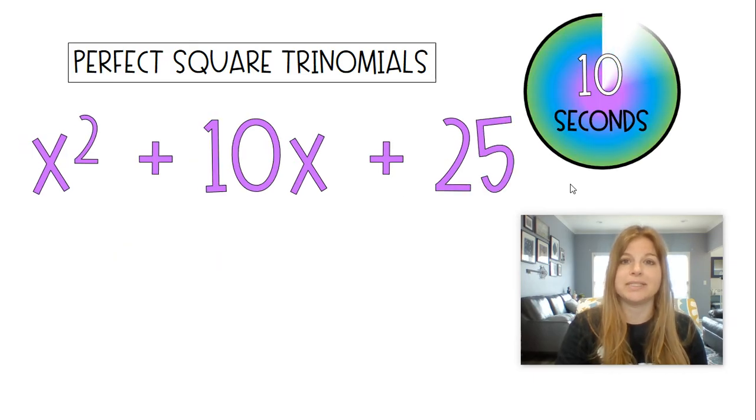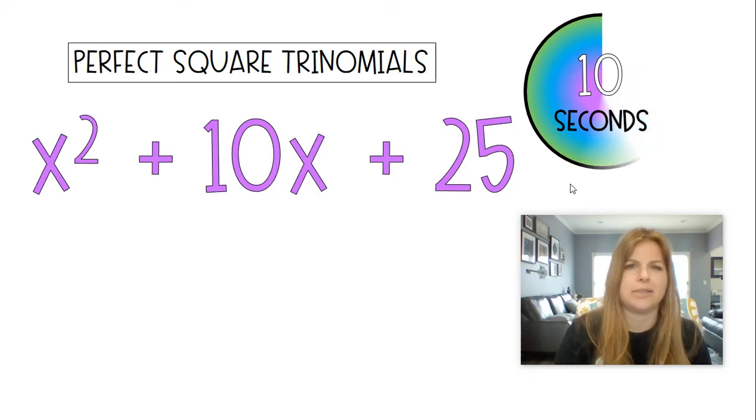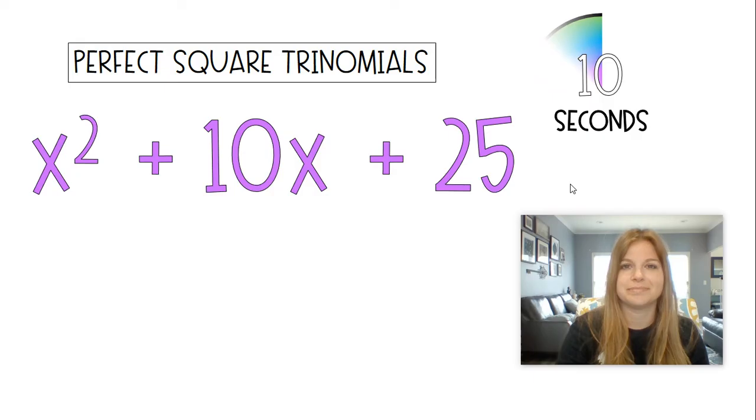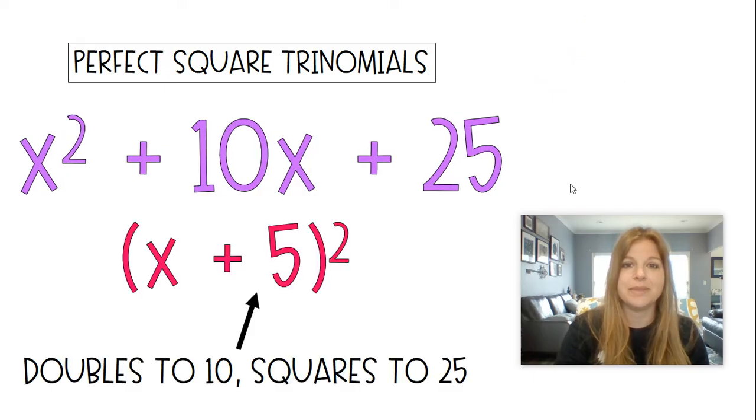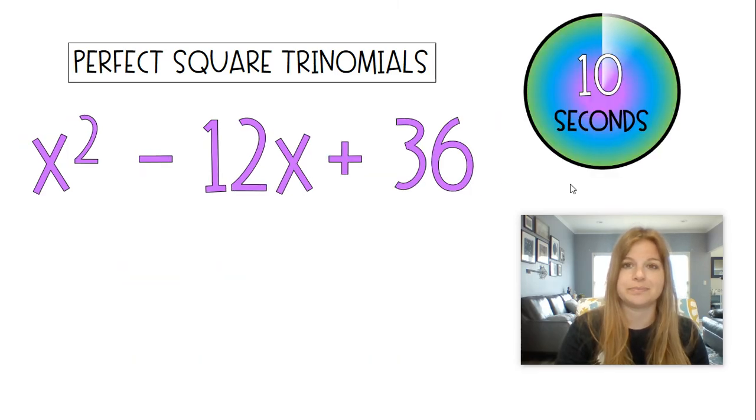x squared plus 10x plus 25. Easy one. Time's up. x plus 5 squared. 5 doubles to get 10 and squares to get 25.